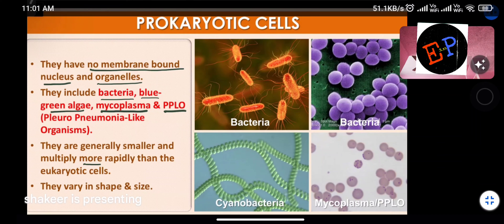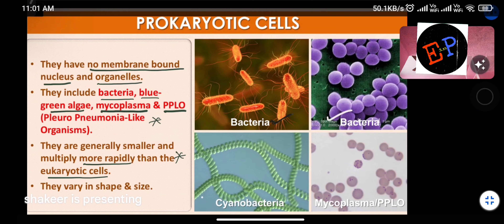Prokaryotic cells are generally smaller and multiply more rapidly than eukaryotic cells. Examples of prokaryotes include bacteria and cyanobacteria. The basic difference is that membrane-bound nucleus and membrane-bound organelles are absent in prokaryotic cells.